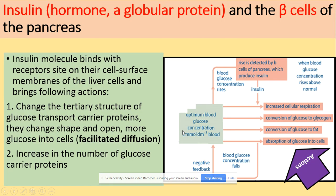In terms of insulin, it is a hormone and therefore a globular protein. Insulin is secreted by the beta cells of the pancreas. The insulin molecule binds with the receptor sites on the cell surface membrane of the liver cells and brings specific actions into place. Once it binds, it changes the tertiary structure of the glucose transport carrier proteins — they change shape and open, so more glucose can enter the cells by facilitated diffusion. The number of glucose carrier proteins can also be increased.